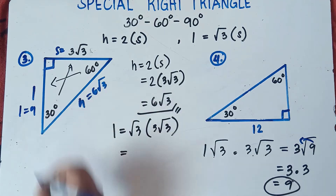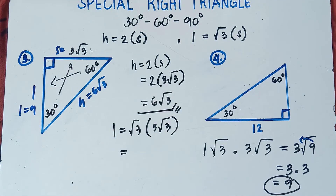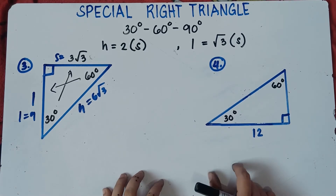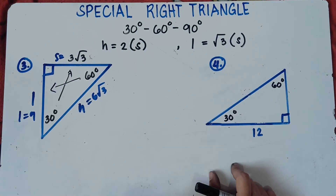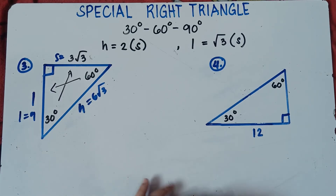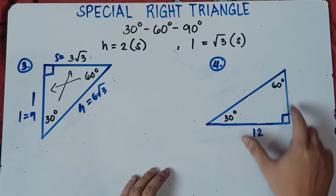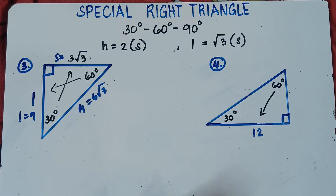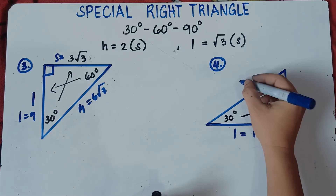That's it for number three. Now let's try the last example, number four — a more complicated one. We need to identify the shorter leg, longer leg, and hypotenuse. The longer leg is opposite the 60-degree angle, the shorter leg is opposite the 30-degree angle, and the longest side is the hypotenuse.